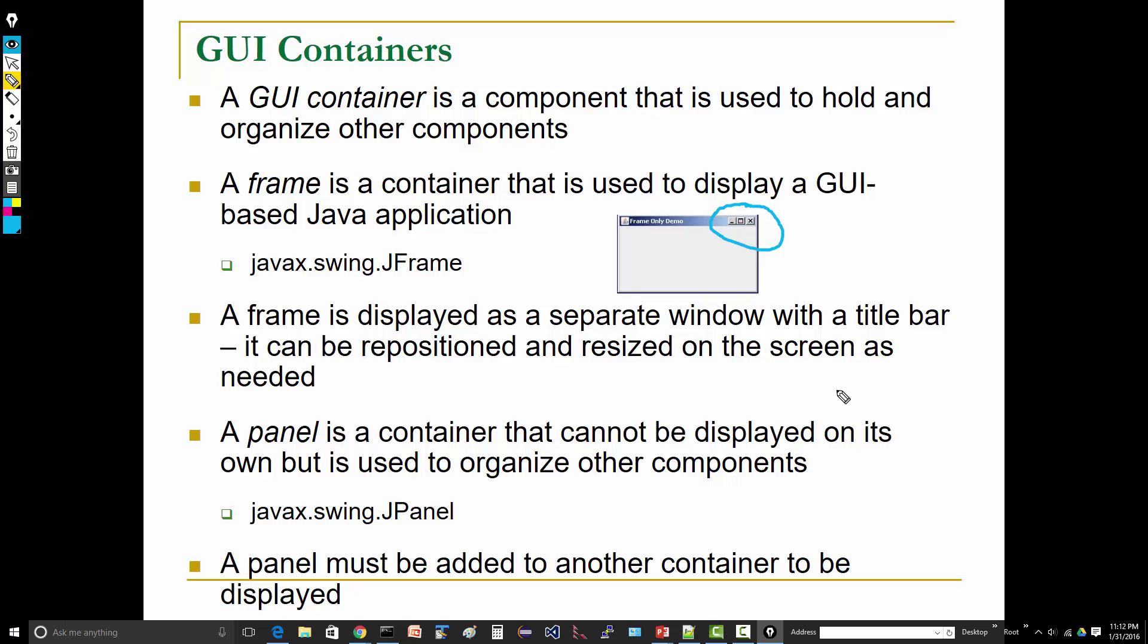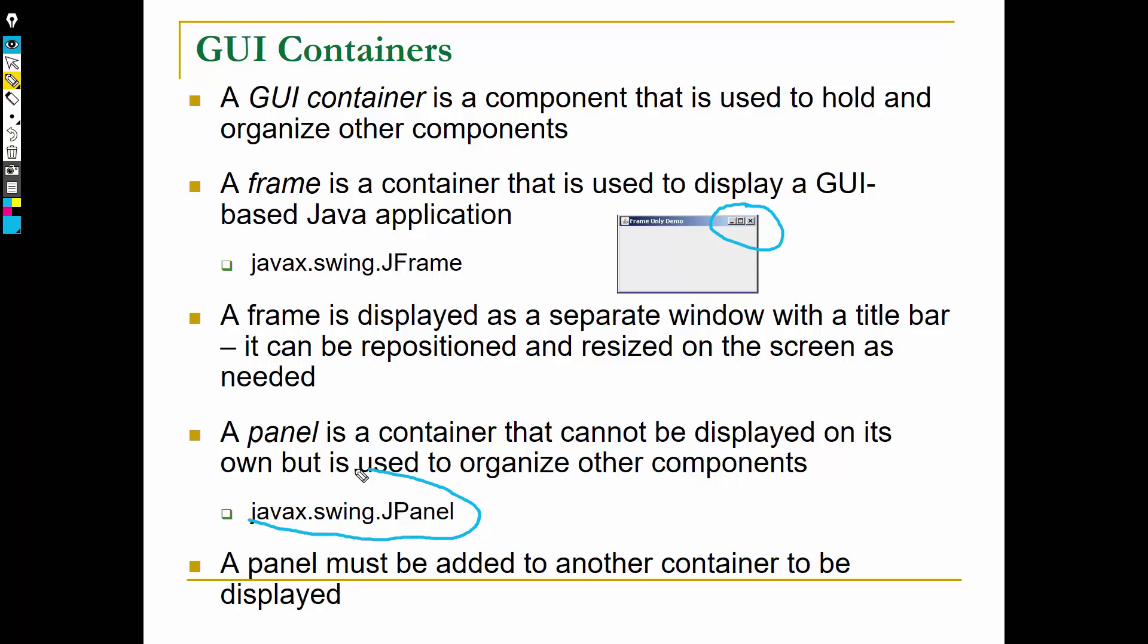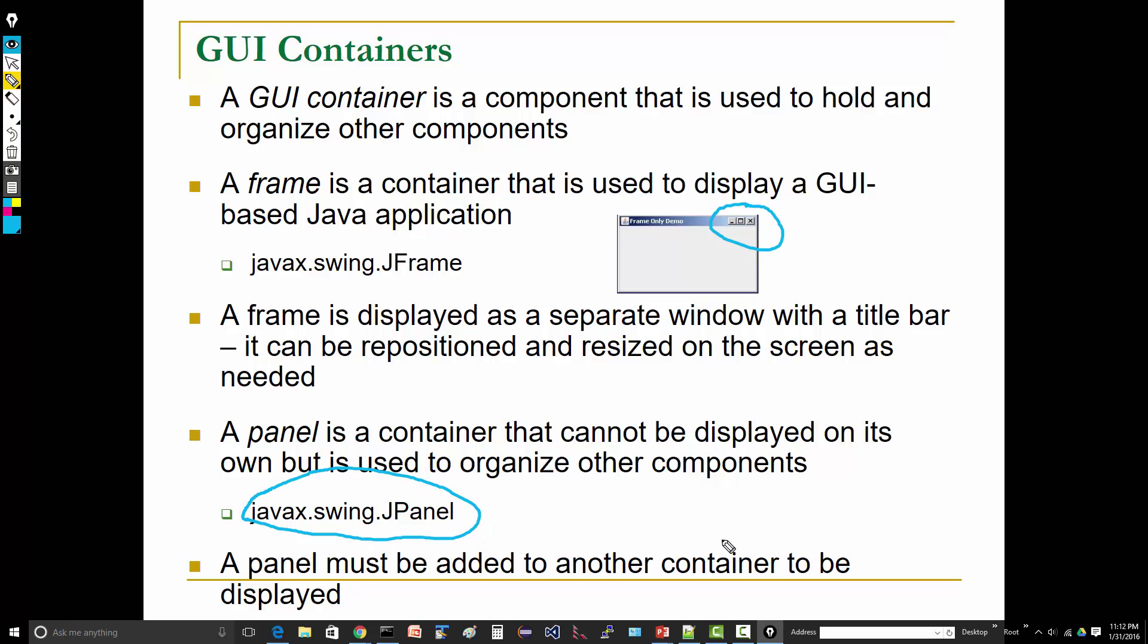Now a JFrame is a top-level container. There's other containers as well. There's a panel: javax dot swing dot JPanel. A panel is also a container, but it's not a top-level container. So a panel is used to organize other components.